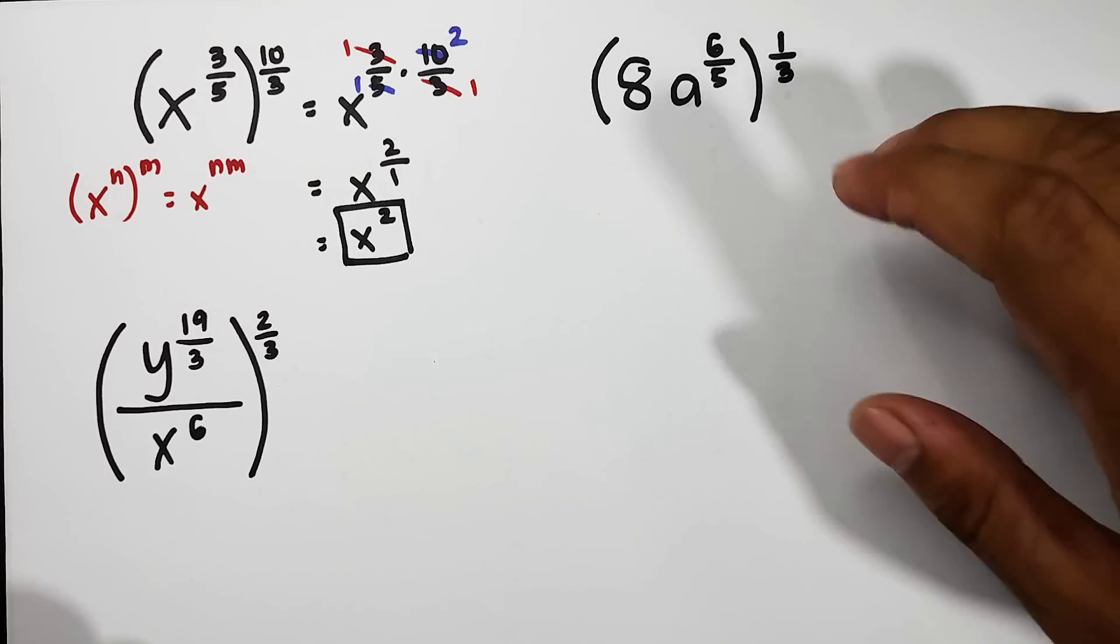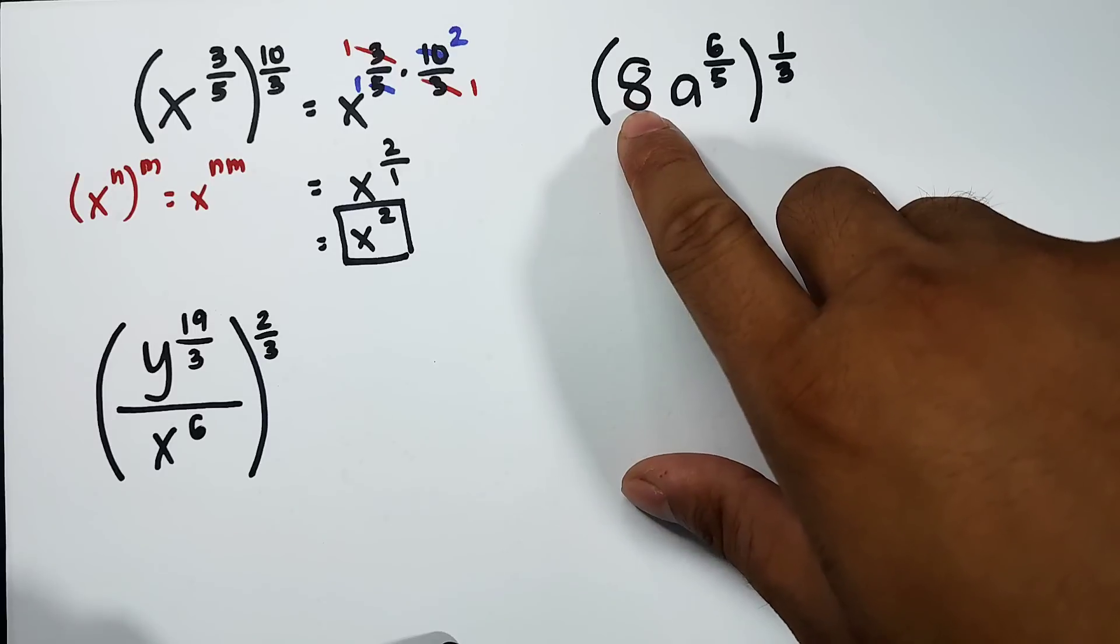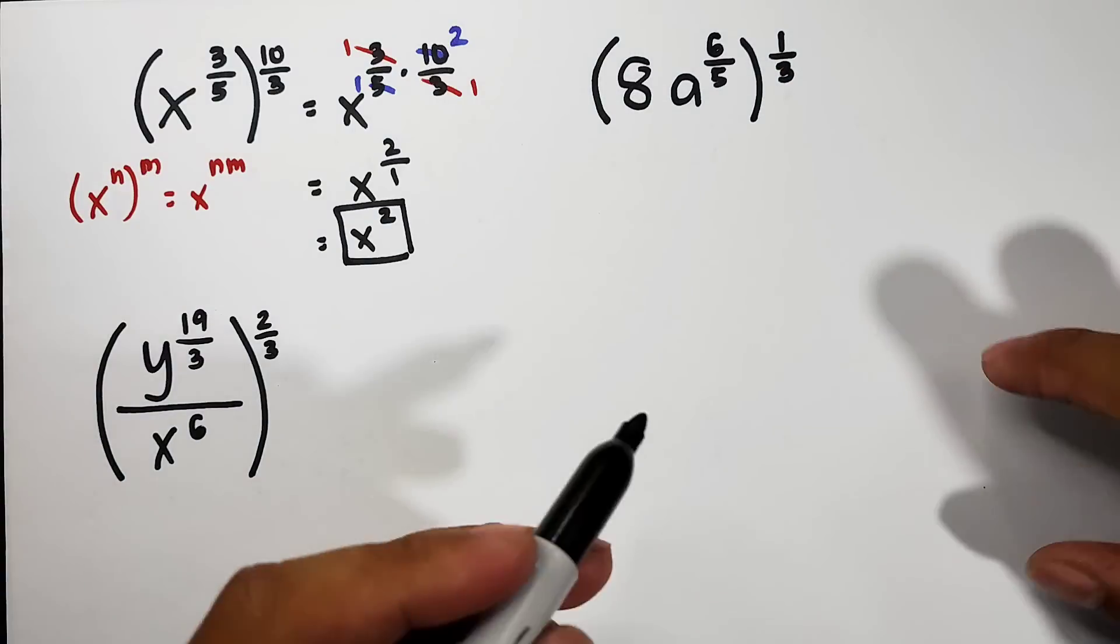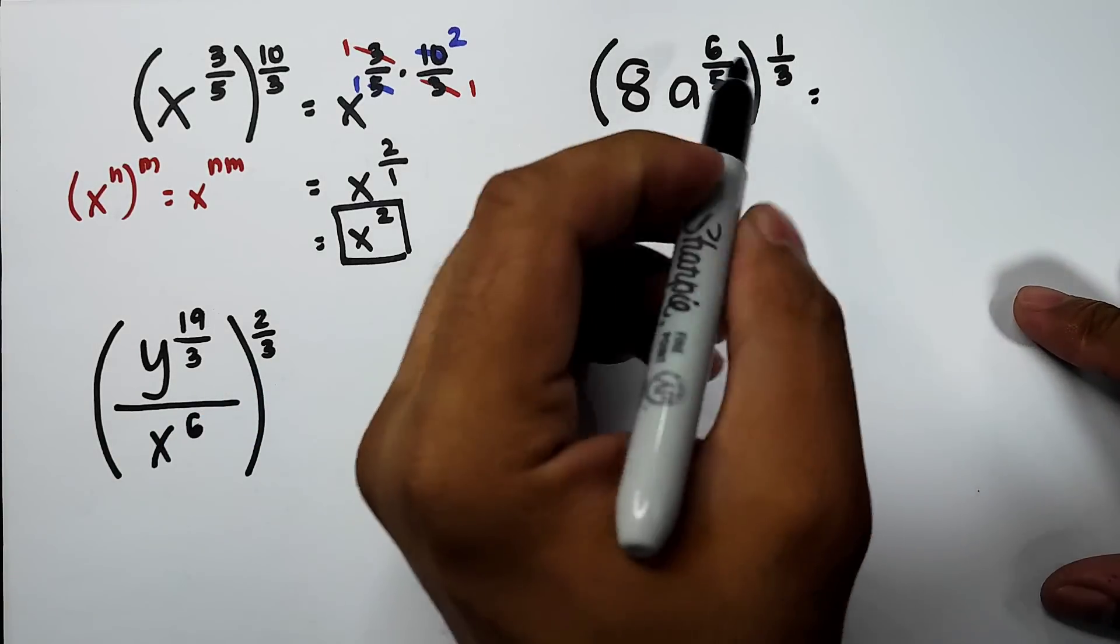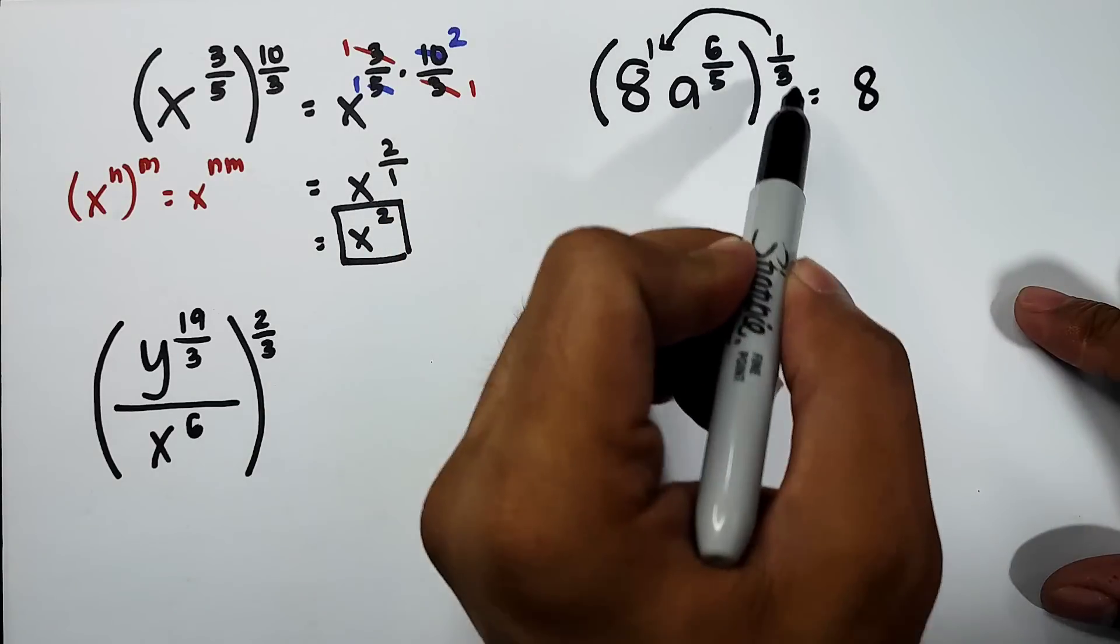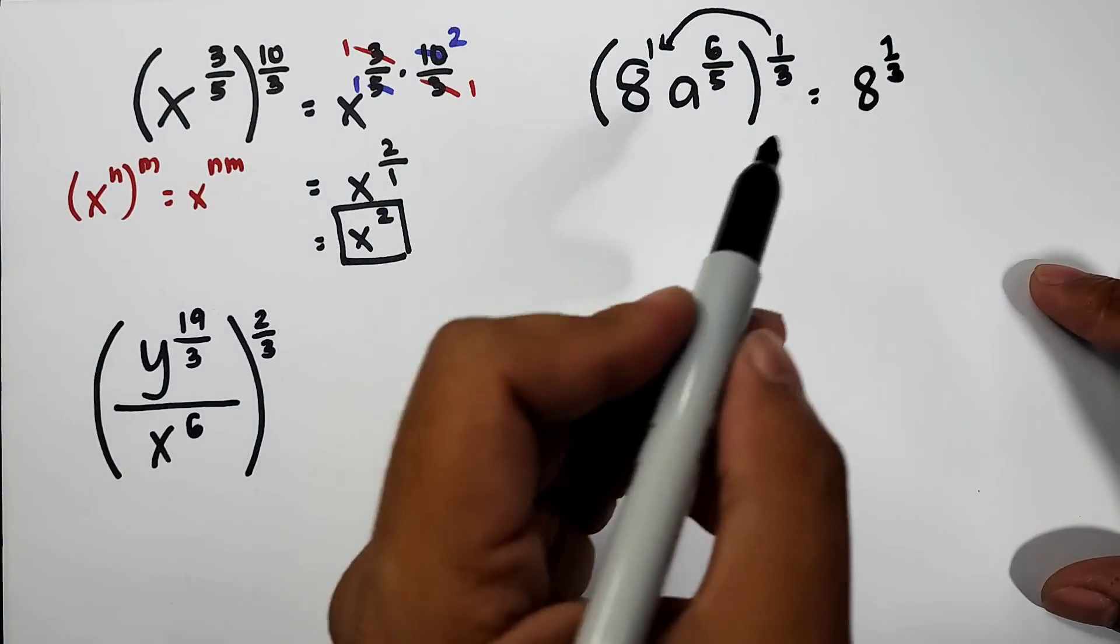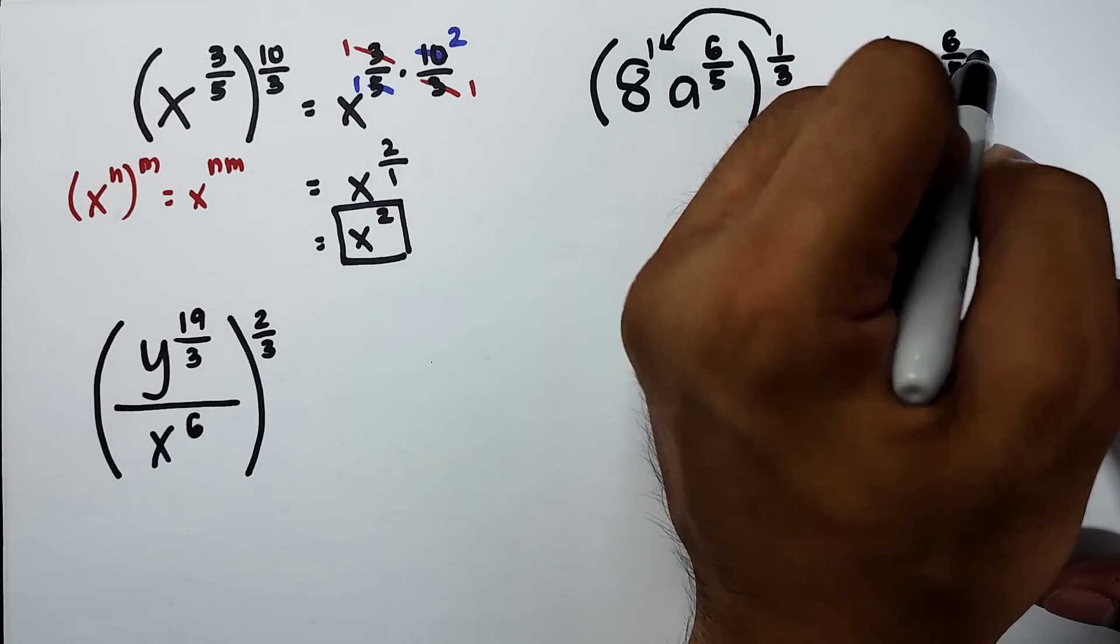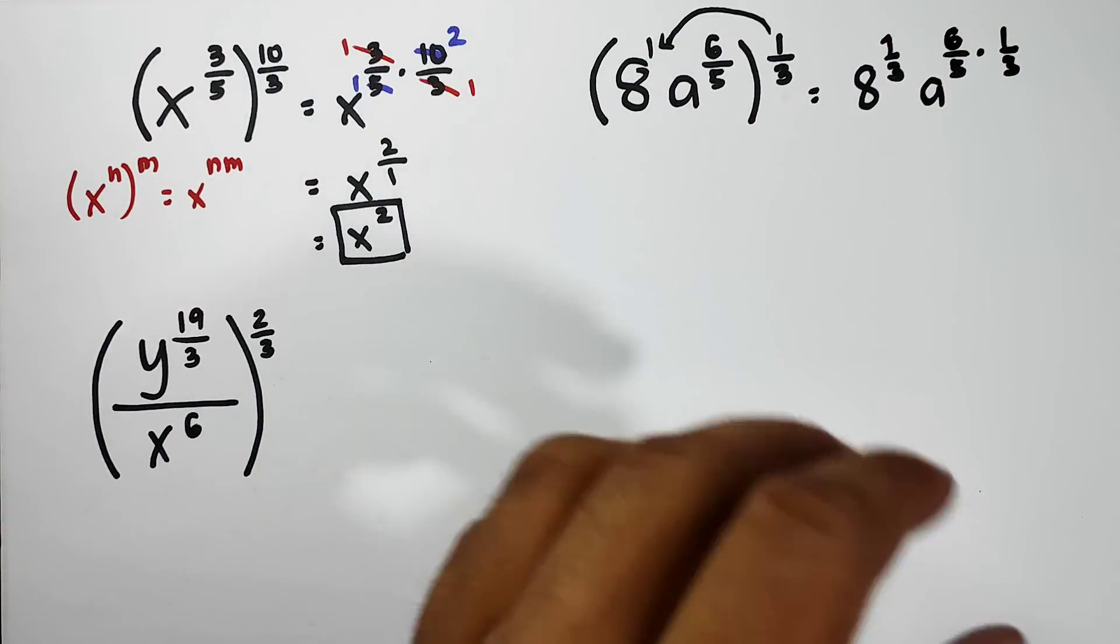And that is x raised to 2. This is the final answer for item number 3. As simple as that guys. Let's continue with number 4. Don't worry, we can do it. 8a raised to 6 over 5, raised to 1/3. So what will happen here is this: let's continue our solution here. We have 8. Let's distribute the exponent. There is an invisible 1: 1 times 1/3, that is 8 raised to 1/3. Next, for a there is a raised to 6 over 5 times 1/3.